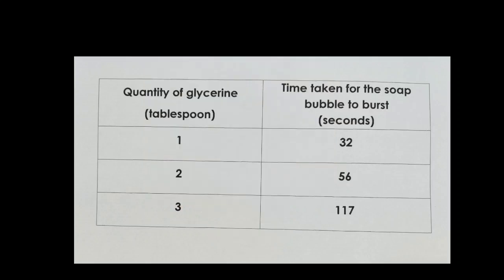Now, based on the quantity of glycerin used in this experiment, we can know that 3 tablespoons of glycerin are needed to produce a soap bubble that can burst the latest. So the time taken for the soap bubble to burst is 117 seconds. That is the longest time for this experiment.